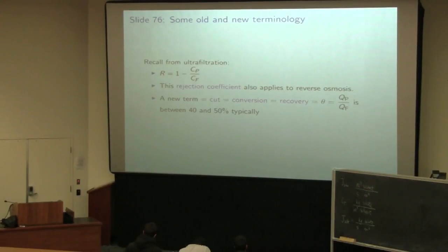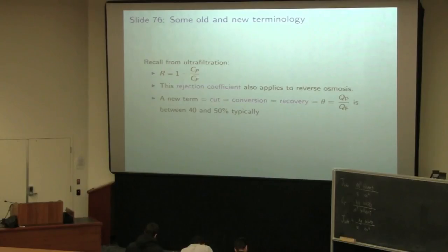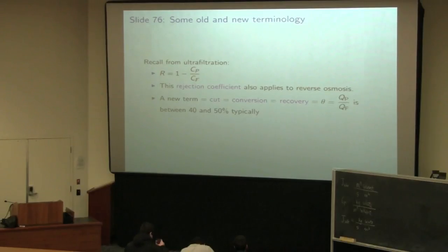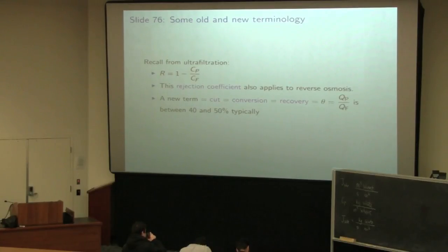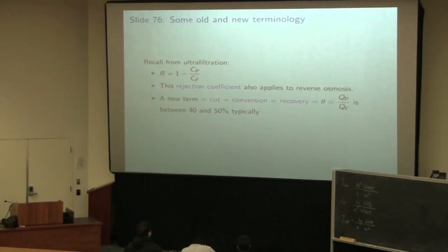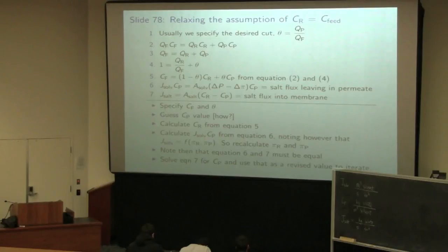So that's slide 76 corrected. The rejection coefficient R is essentially a measure of the ability to reject the salt or solute in the system. CP should ideally be close to zero, and CF is whatever you feed in. Sometimes you'll see recovery, which is CP over CF, and then rejection is one minus that. So that's just one correction.